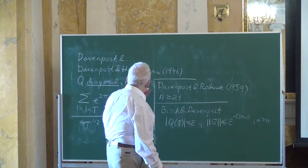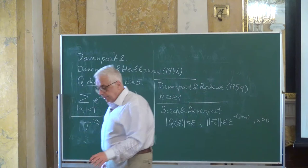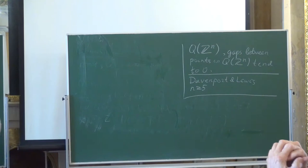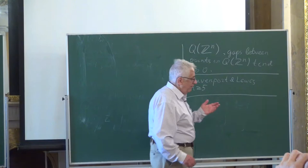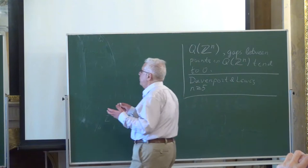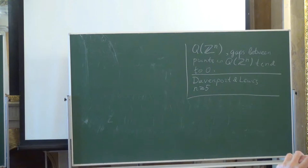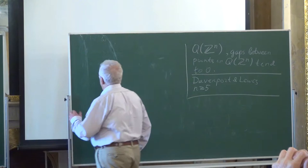This strengthening by Birch and Davenport was used in the series of papers by Davenport and collaborators. Now regarding positive definite forms and the Davenport-Lewis conjecture: for a very long time there was no proof for any n for general (non-diagonal) quadratic forms, even if n was extremely large.